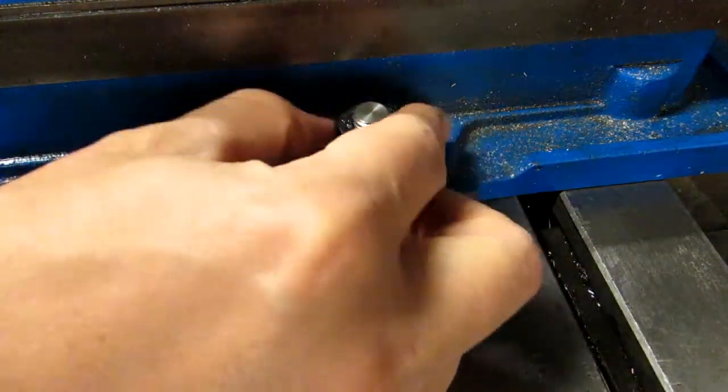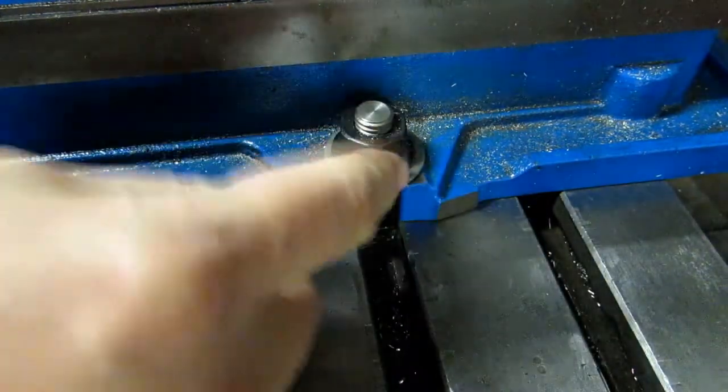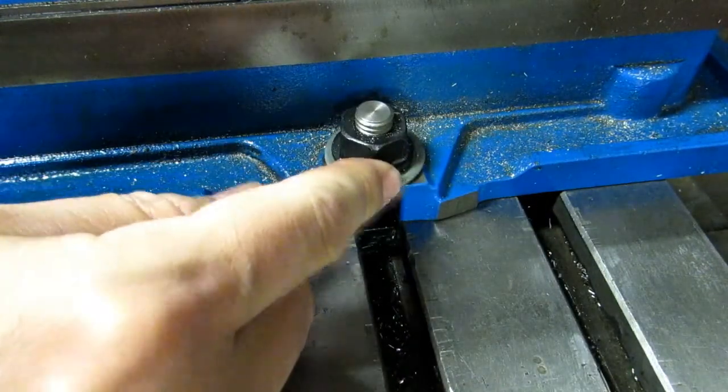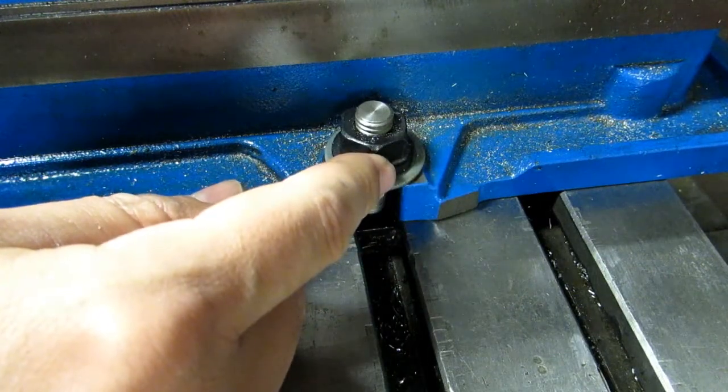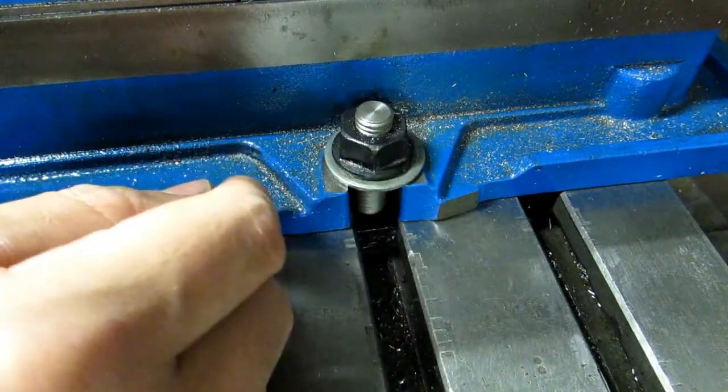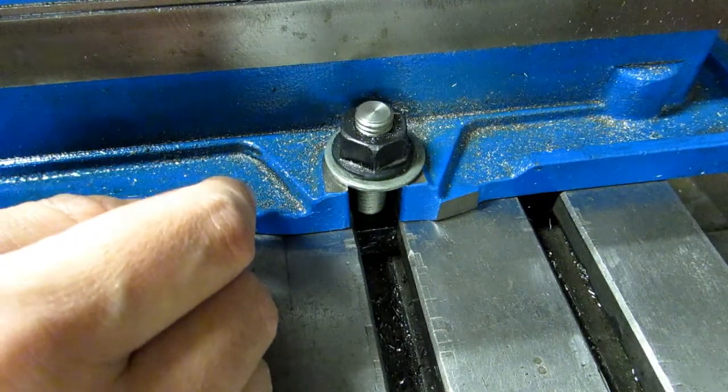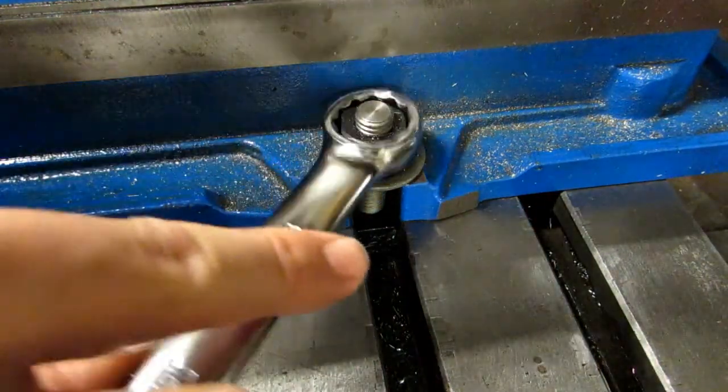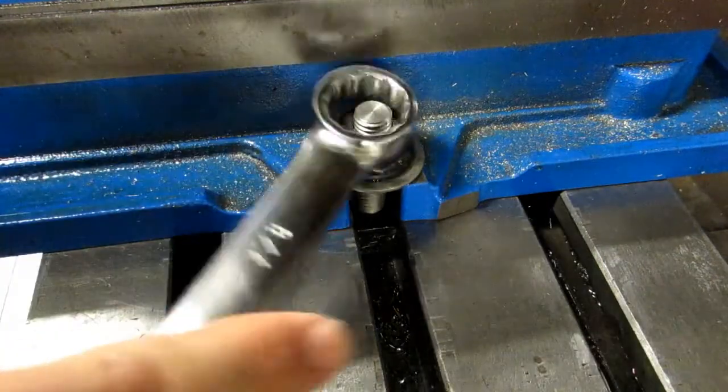Now the next thing I'm going to do is I'm going to tighten down this nut. This is on the right side of the vise because I'm right handed. If you're left handed, feel free to do it the other way. It doesn't matter. And I'm going to tighten down this nut all the way, as tight as I'm going to make it.